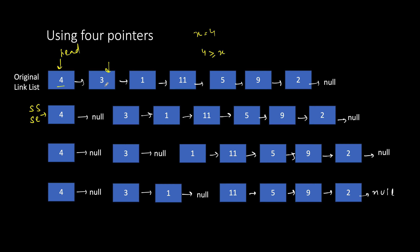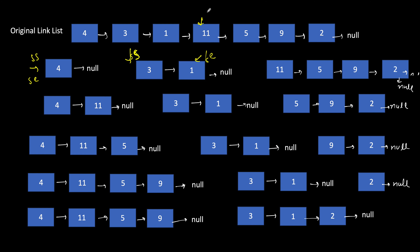Now first-list-start and first-list-end both point to 3, with its next pointing to null. When we come to 1, it is also less than x, so it gets appended to the end of the first linked list. Now first-list-start points to 3 and first-list-end points to 1. The second linked list start and end remain the same. When we move to 11, it is greater than x, so it gets appended to the end of the second linked list.